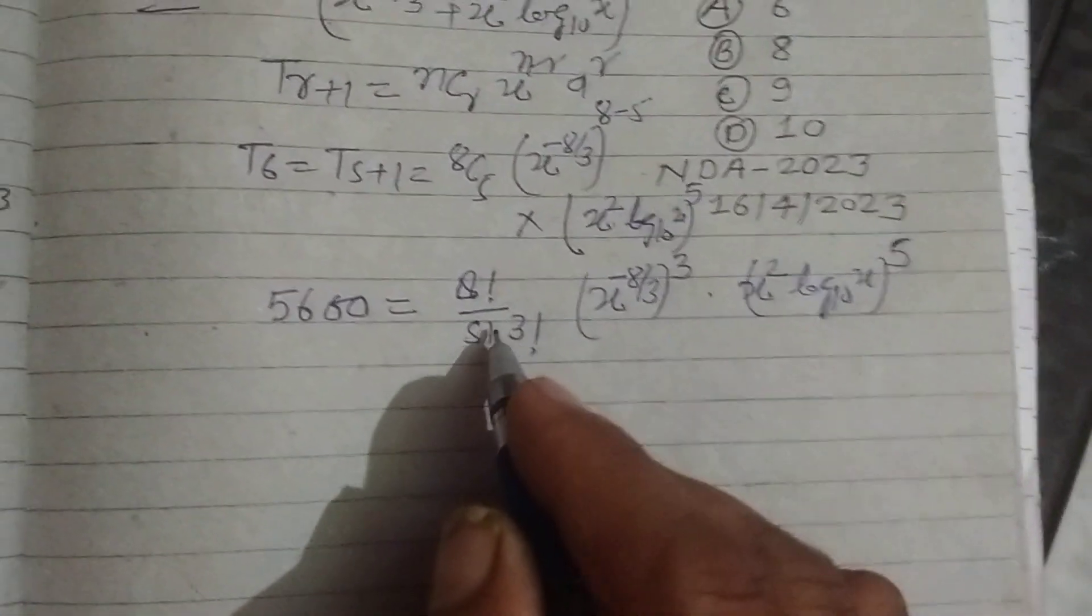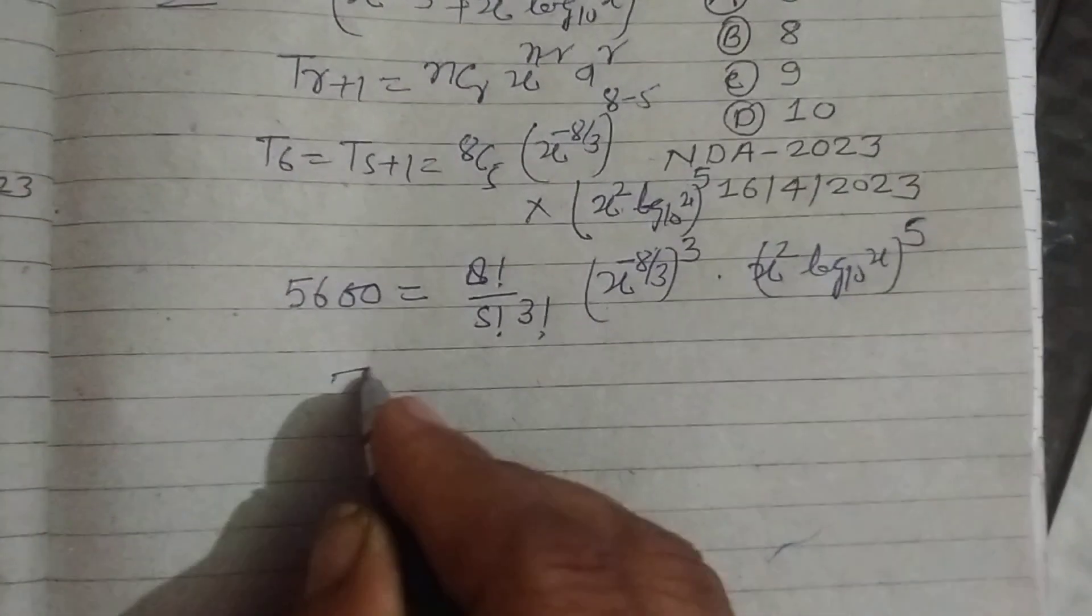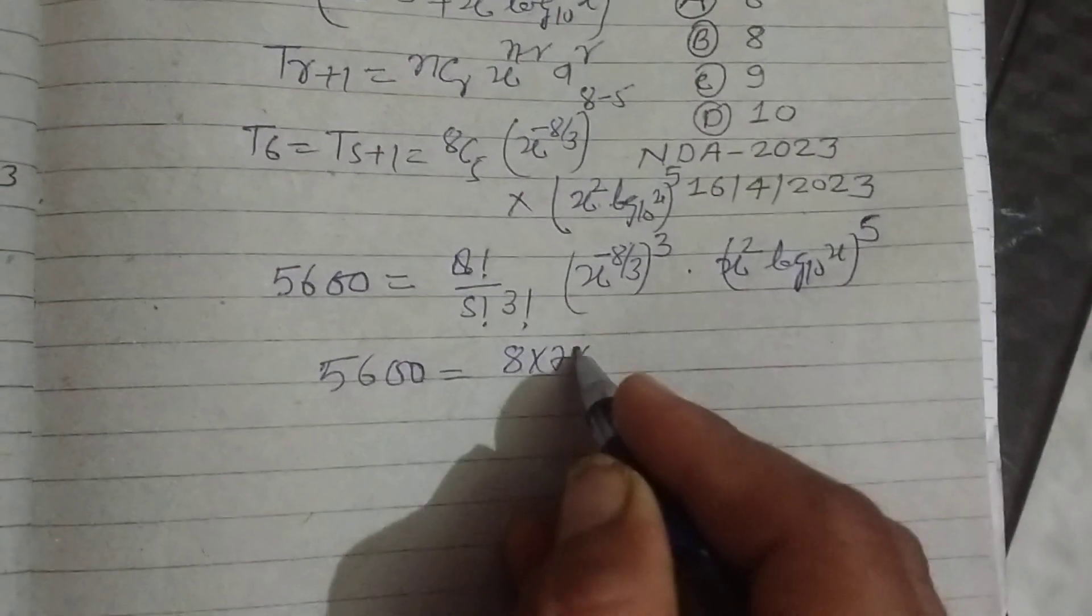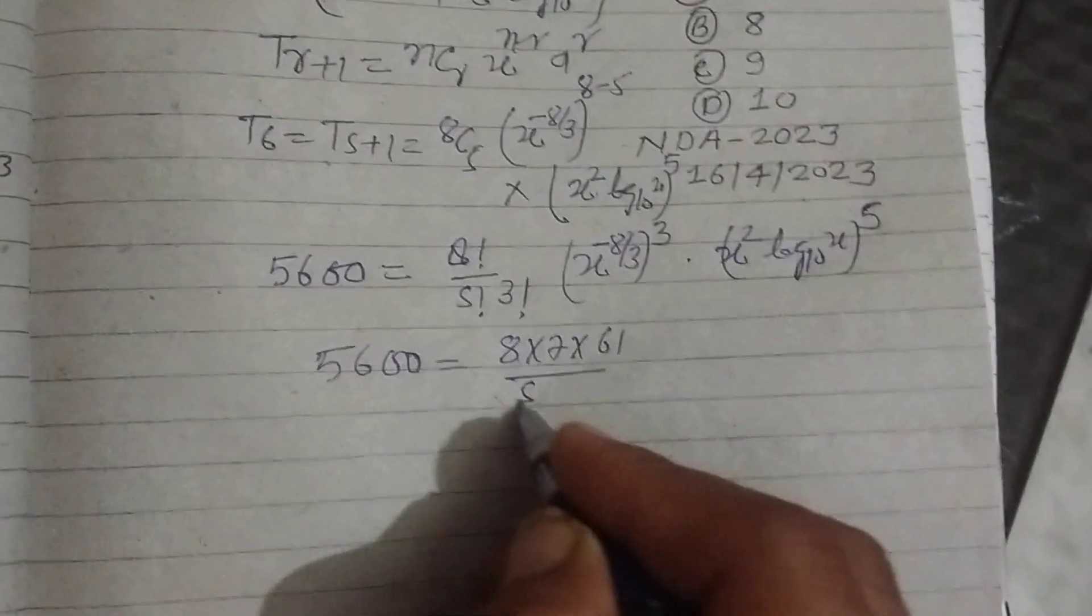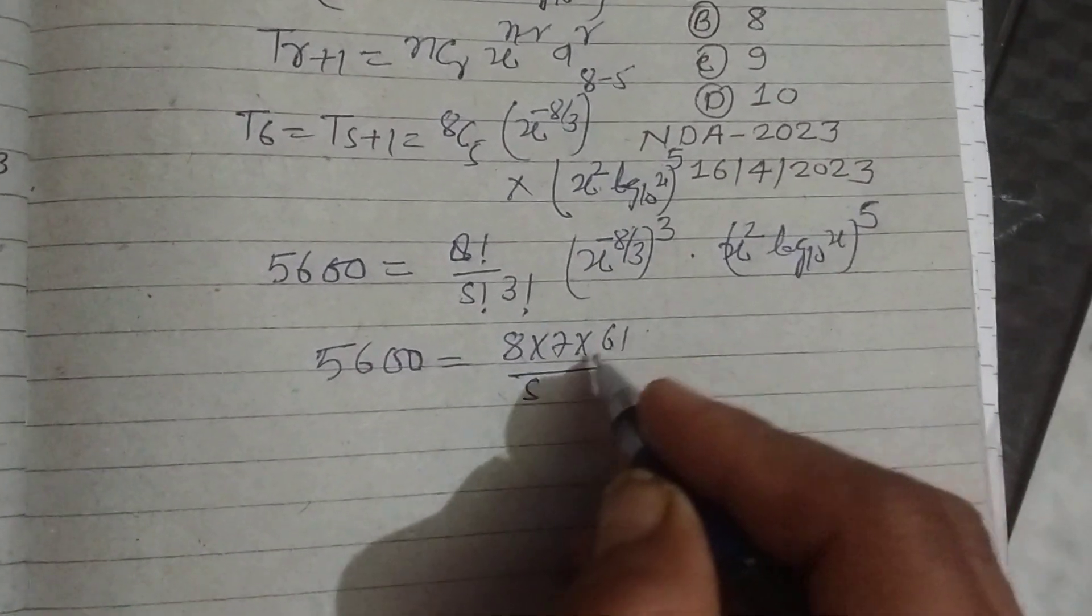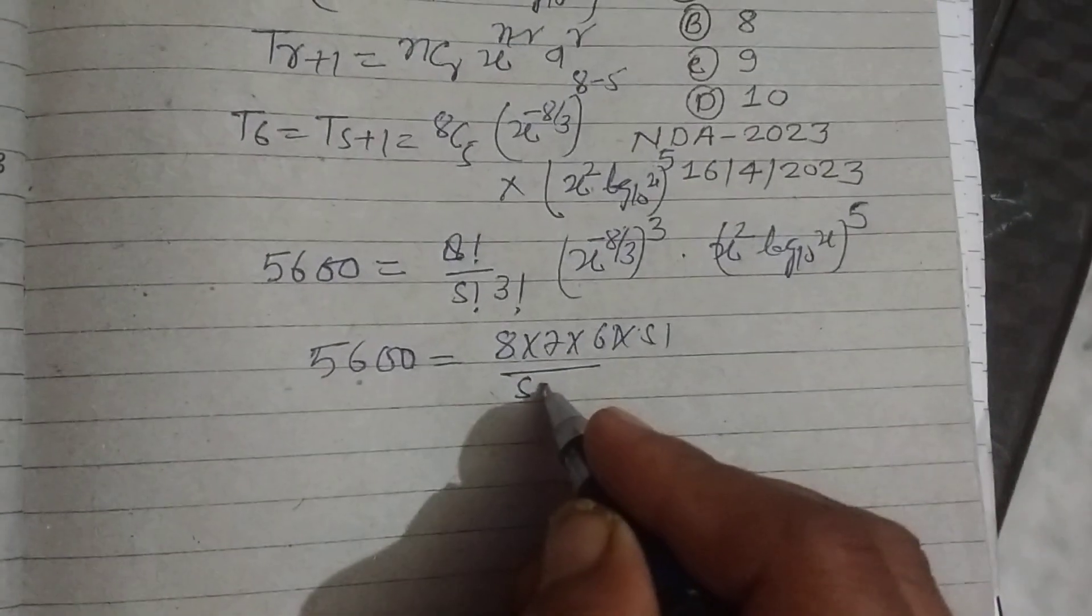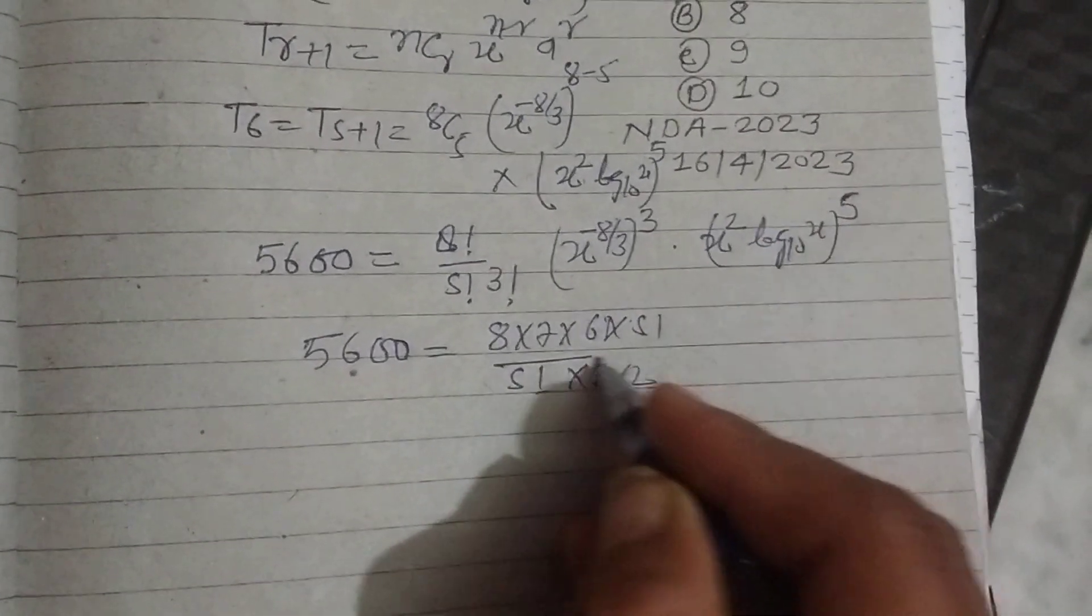Now, 5600 equals factorial 8, that's 8 times 7 times factorial 6 upon 6 times factorial 5 upon factorial 5 times 3 times 2.